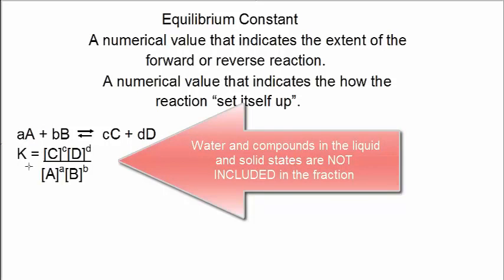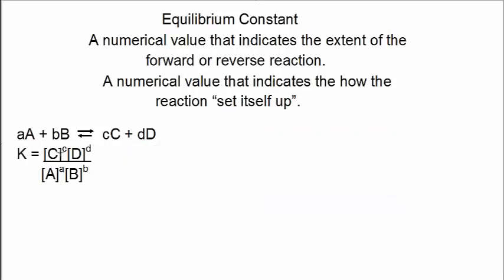Now I'm going to point out many things here. First I'll start off looking at the math. I want to emphasize that [C] is the molar concentration of one of the products, and [D] is the molar concentration of the other product. These superscripts are in fact powers — exponents. The exponent c is the coefficient in front of the formula for C, and the exponent d is the coefficient in front of the formula for D, and we have [C] and [D] multiplied.